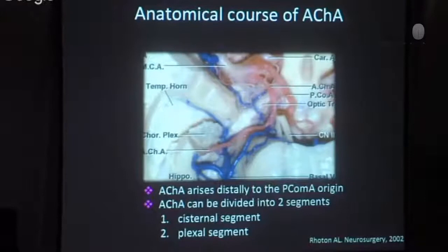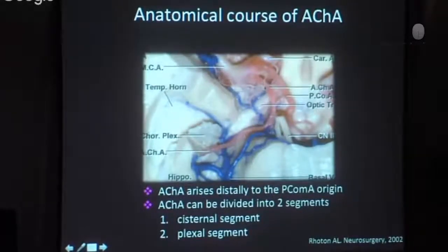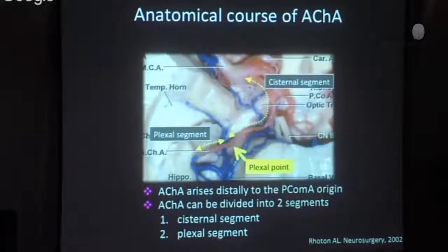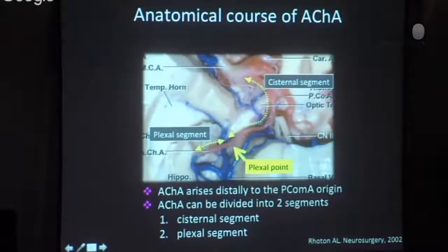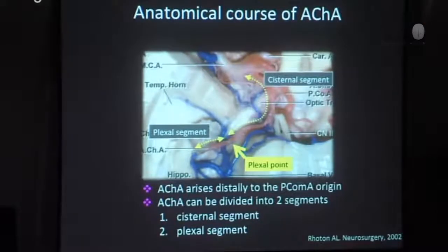This slide shows the anatomical course of the anterior choroidal artery. The anterior choroidal artery arises distally to the PCOM. It can be divided into two segments: the cisternal segment and the plexal segment. The cisternal segment extends from the anterior choroidal artery origin to the choroidal fissure. The term 'plexal point' has been proposed to describe the point of entry of the anterior choroidal artery into the lateral ventricle at the choroidal fissure.